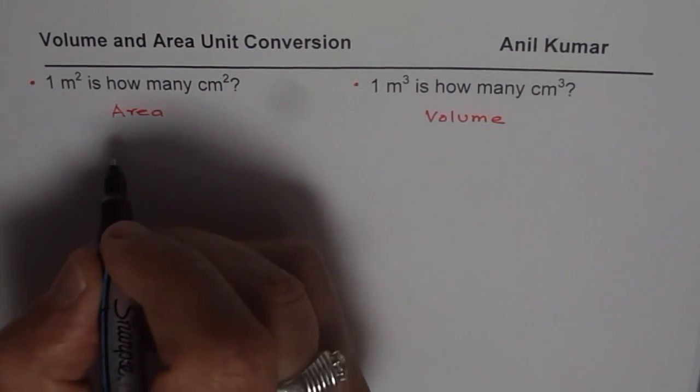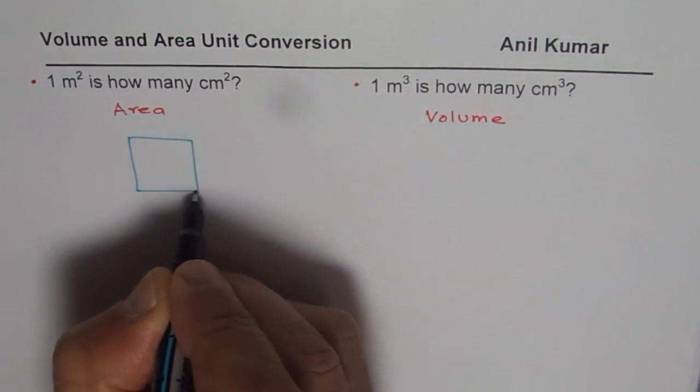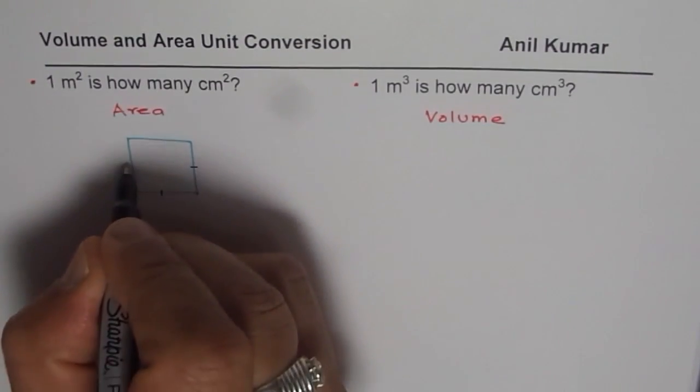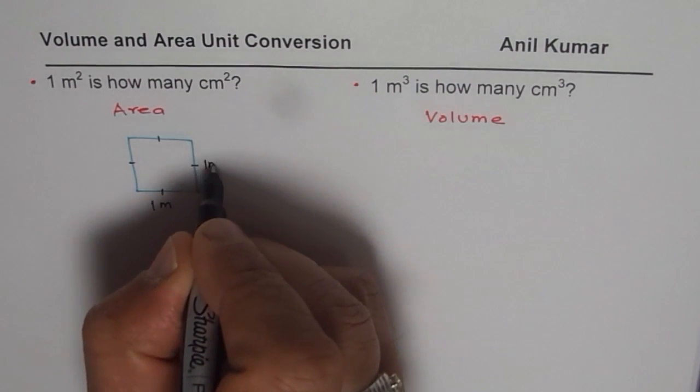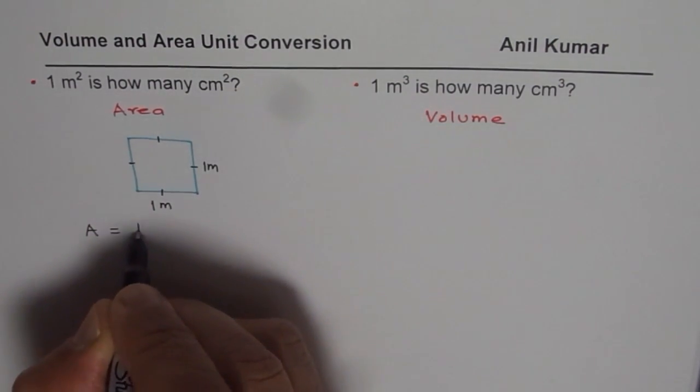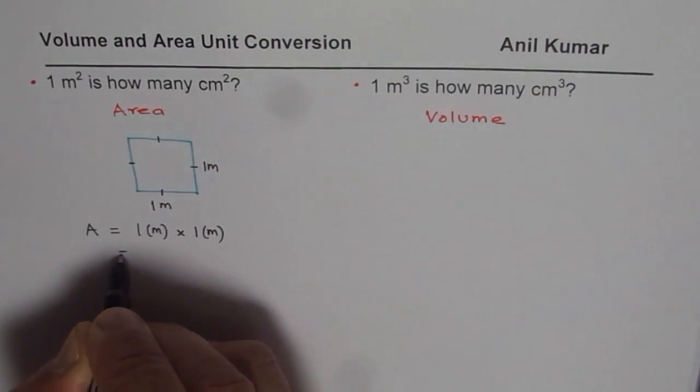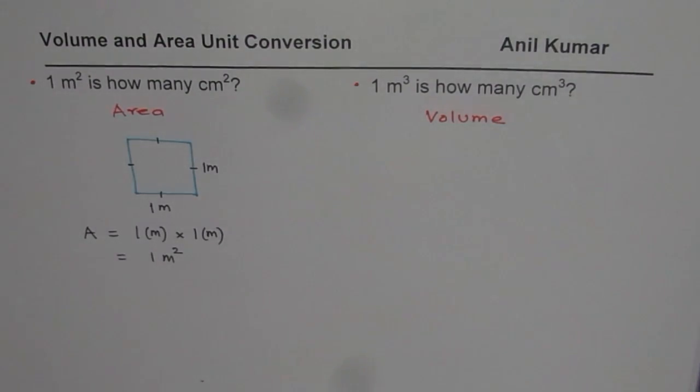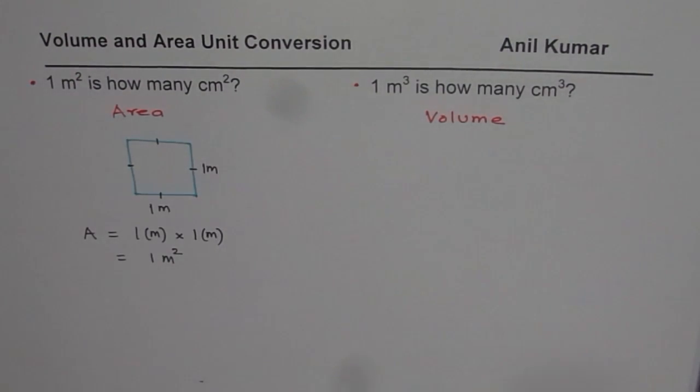To answer let us make a square. So here is a square and let us assume that this square has length of one meter and width also of one meter. Since it is a square all sides are equal. Then what is the area? Area will be one meter times one meter, and that gives us one meter square. So that is the area one meter square which we are talking about. Now if I have to convert this to centimeters.